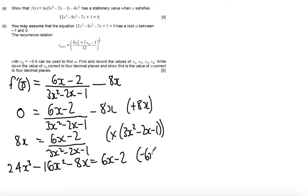Now I'm going to subtract the 2 from both sides so I get 24x cubed minus 16x squared minus 8x minus 6x is minus 14x. I'm adding 2 to both sides so I just corrected that there, so I get plus 2 equal to 0.